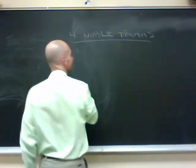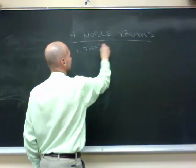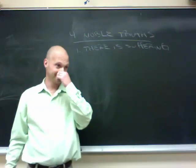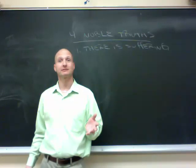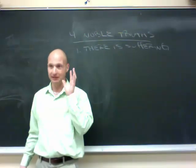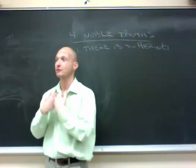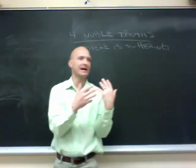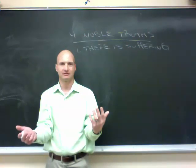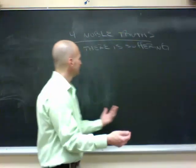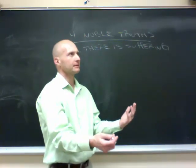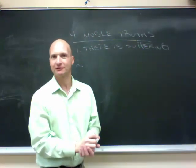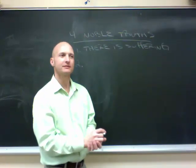The four noble truths. Number one: there is suffering. It's unavoidable. Now perhaps Epictetus differs here somewhat because he thinks that to a very great extent we can avoid suffering if we can properly distinguish what is within my power from what is not. But even Epictetus, I'm sure, would not say that anybody can be completely free from suffering. So to live is to suffer.